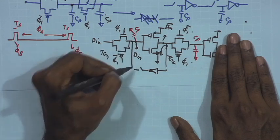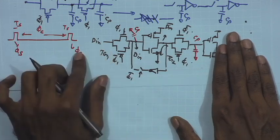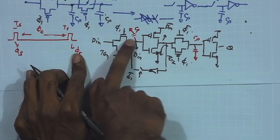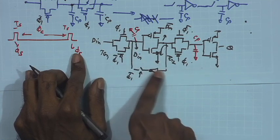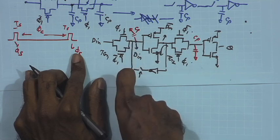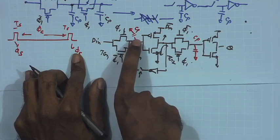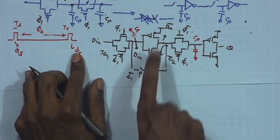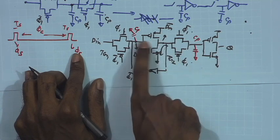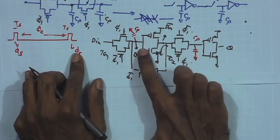We add an inverter in the feedback path along with a switch controlled by phi one bar. When phi one is on, the transmission gate is transparent, this node is connected to Din, and the feedback path plays no role. As soon as this turns off, we turn on the feedback path — creating positive feedback in this loop — clamping both node voltages to the values to which they were written.